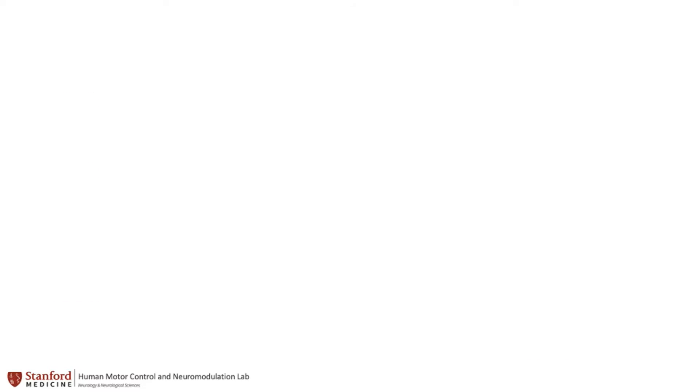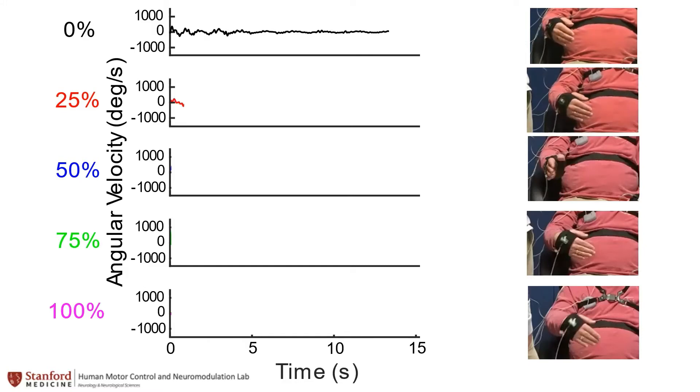Here you will see one example of a patient performing the wrist flexion extension task side-by-side with the trace of the angular velocity of the movement. This task is a validated quantitative assessment of progressive bradykinesia where the participant repetitively flexes and extends at their wrist.